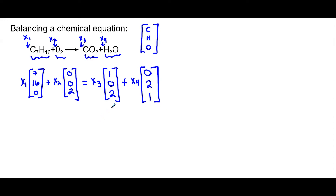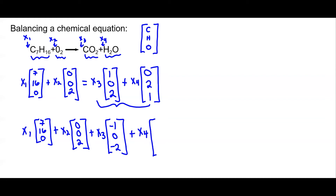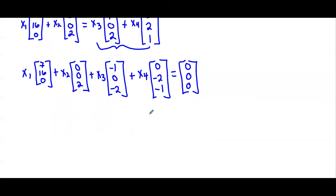This is a vector equation. All we need to do is move everything on the right side to the left — that's going to change the signs. We'll set it equal to zero and solve for these coefficients. This is just a homogeneous linear system, so I can put that into a matrix and solve it.